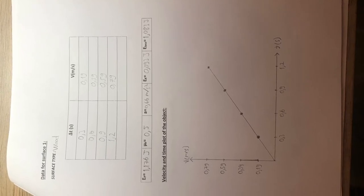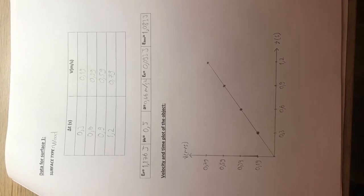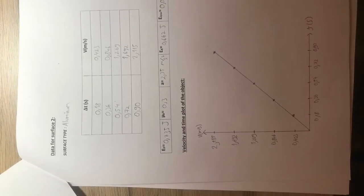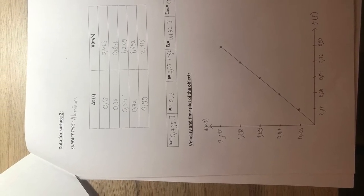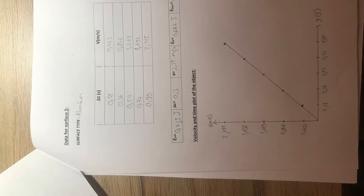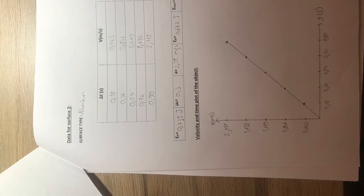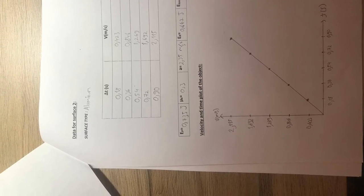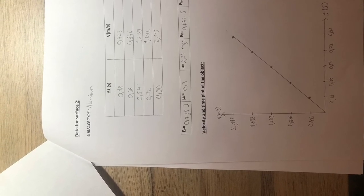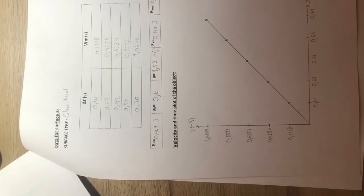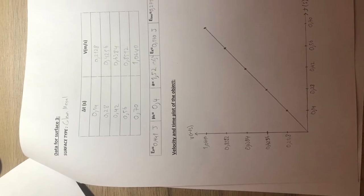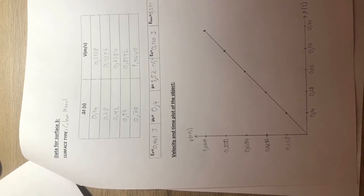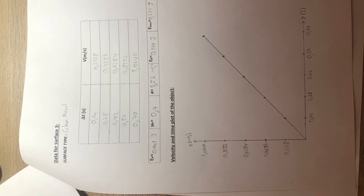In this experiment, I first found the net force exerted on the block and then calculated the acceleration value. Using the acceleration value, I was able to find the final velocity and kinetic energy of the block. Then I compared the initial gravitational potential energy and kinetic energy, and found the amount of energy loss caused by friction on the inclined plane.